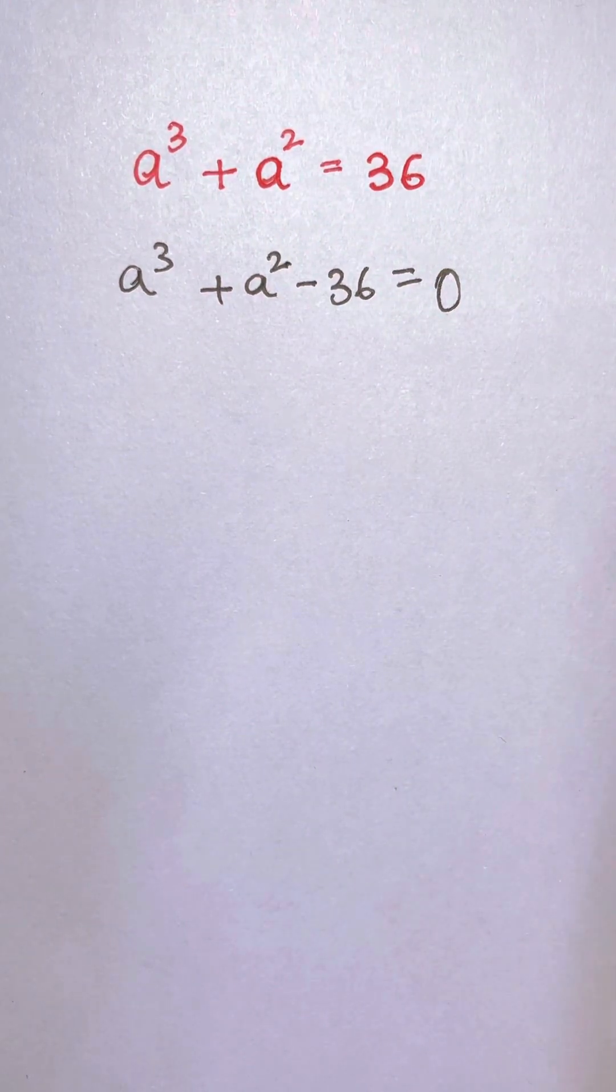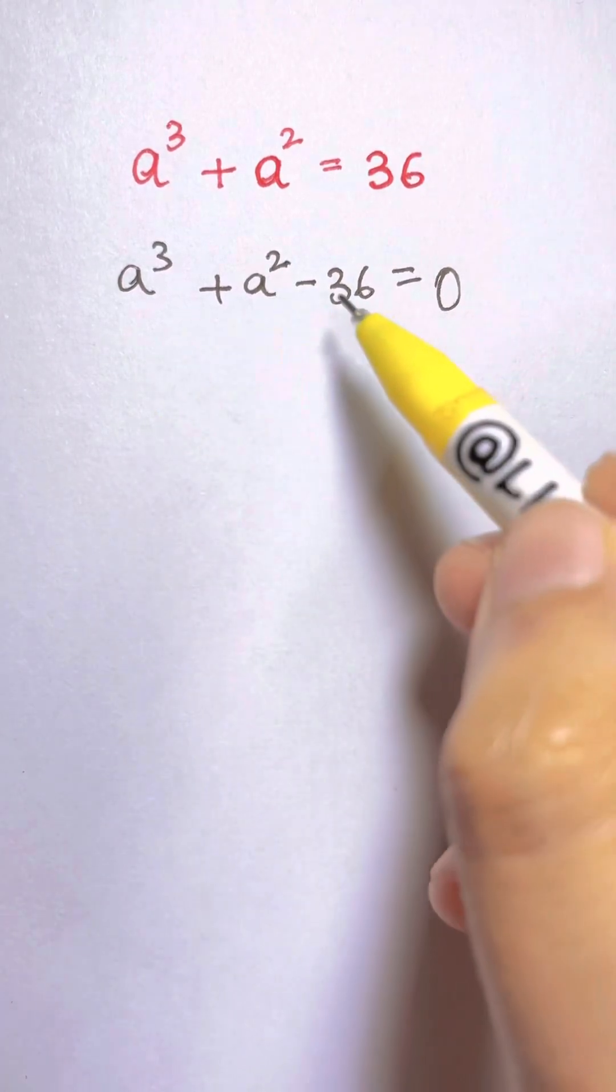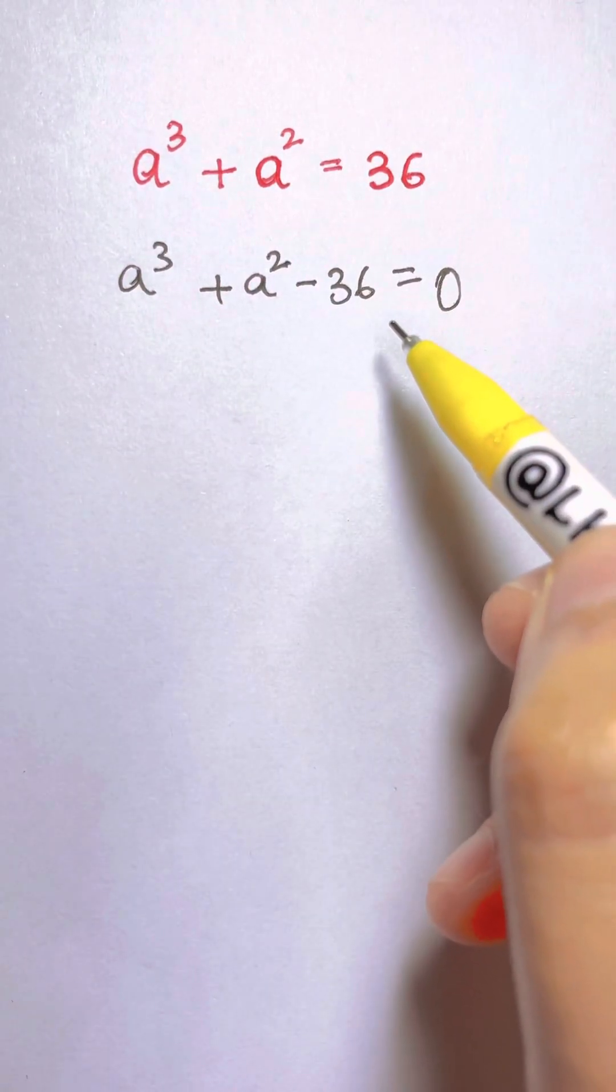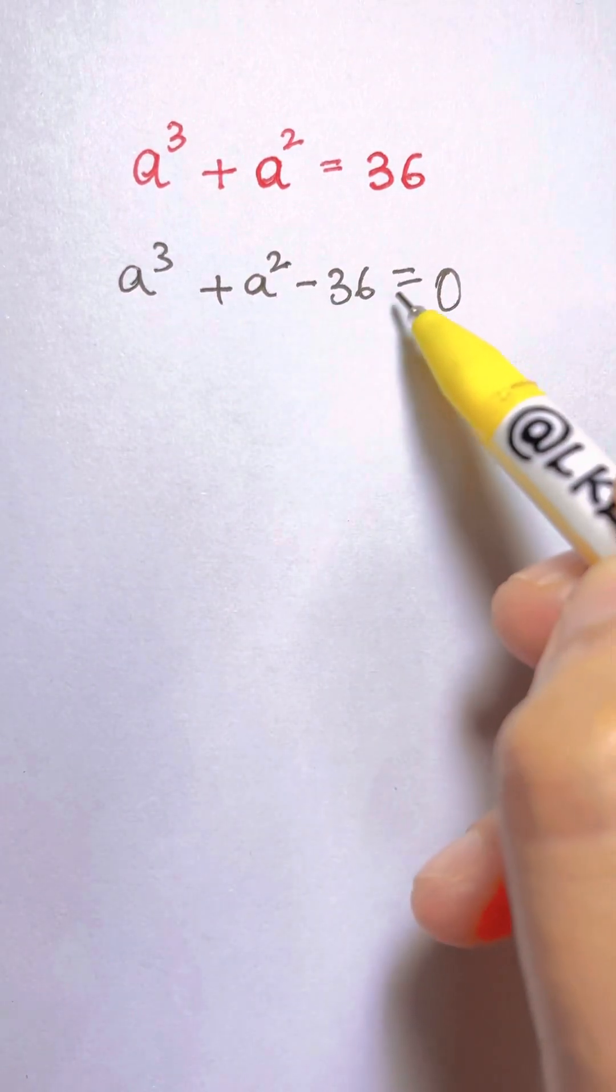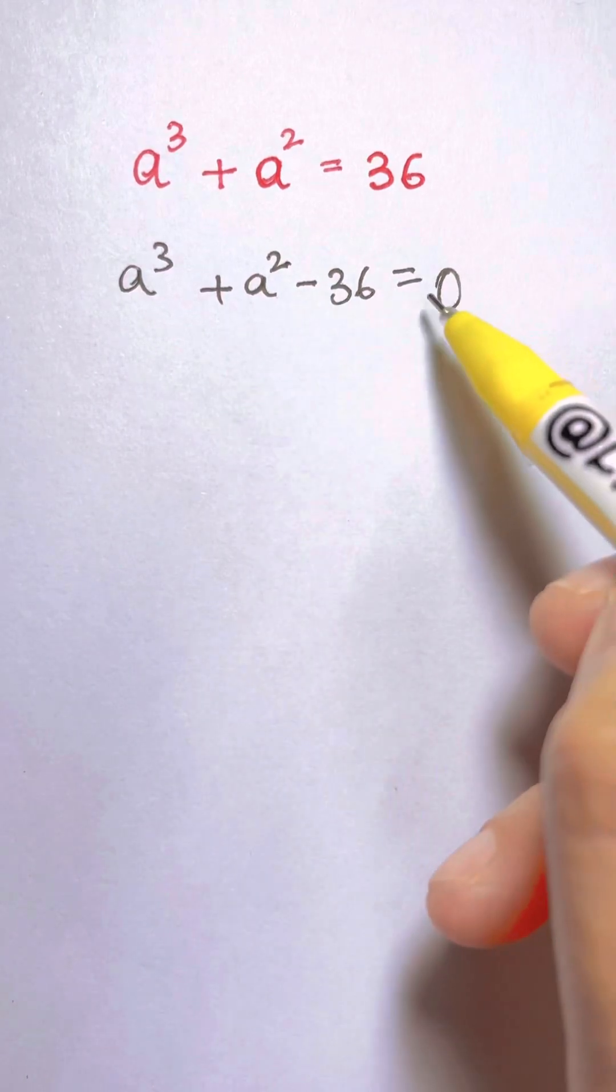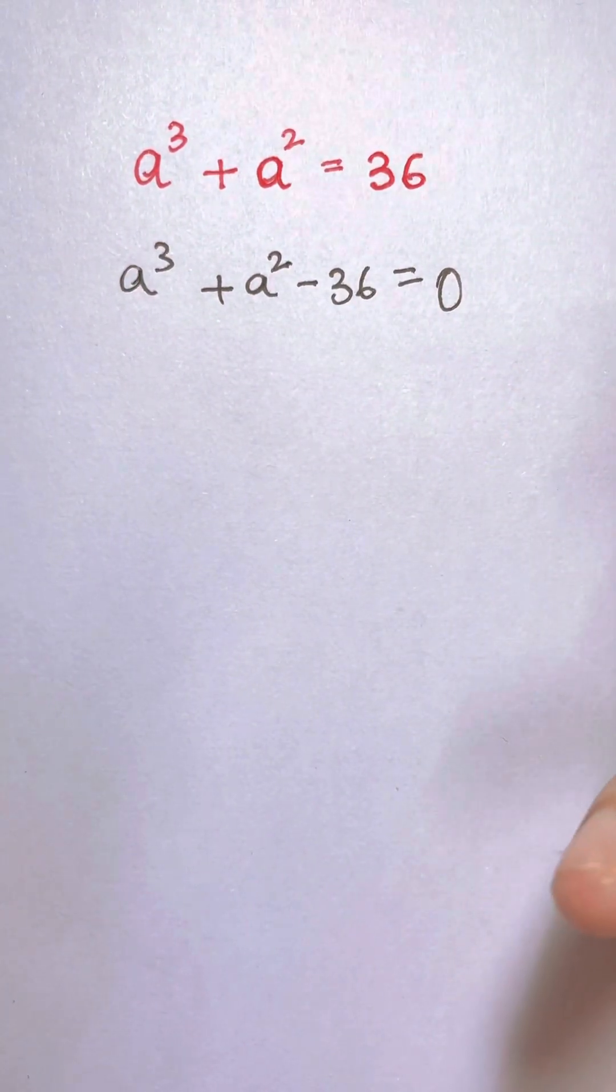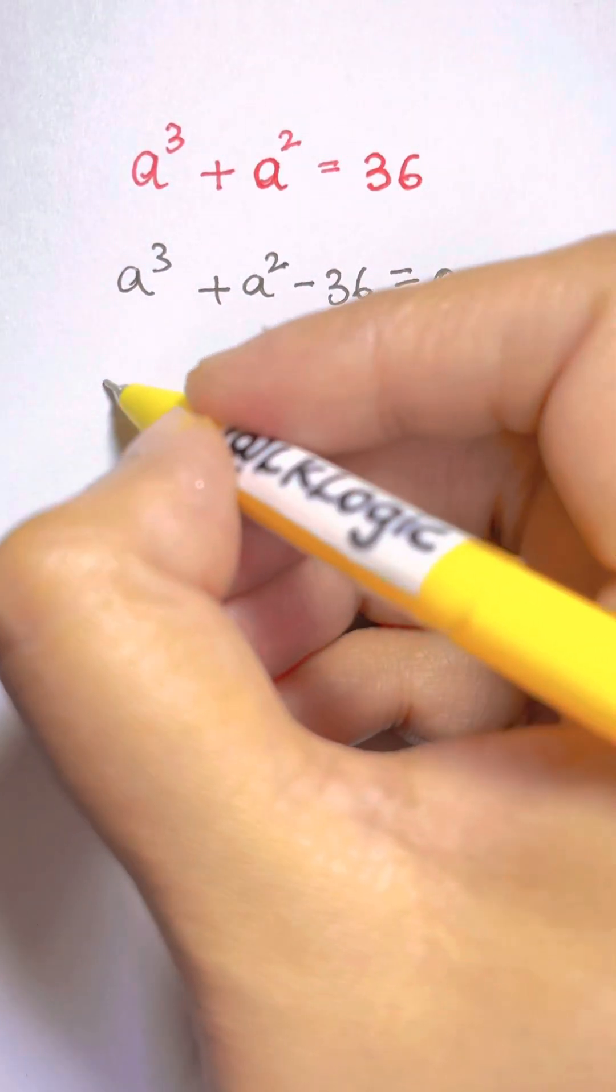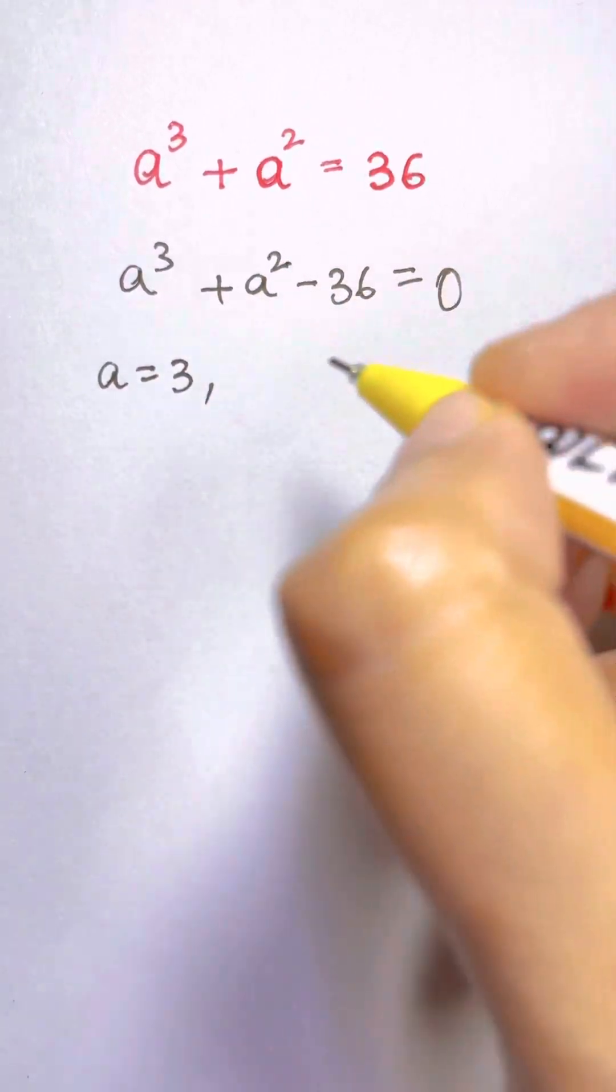Now what are we going to get? By using trial and error method you can find out one factor. For this if a equals 1, 1 + 1 - 36 is not equal to 0. If it is 2, it is not equal to 0. So let's try the lucky number 3. If a is equal to 3.